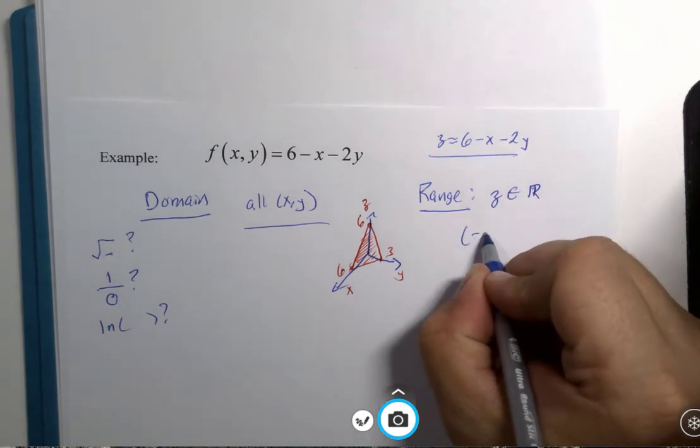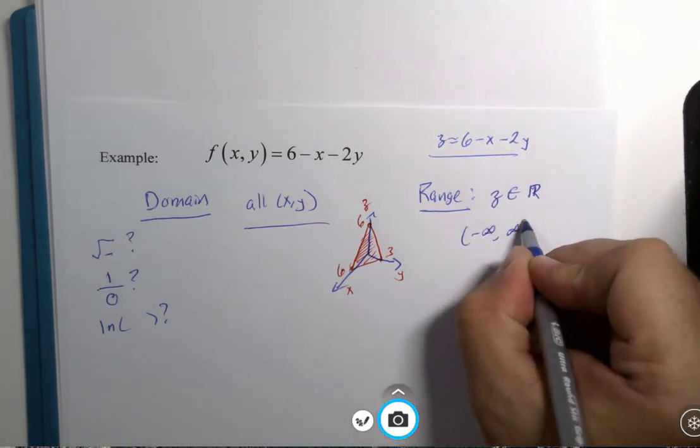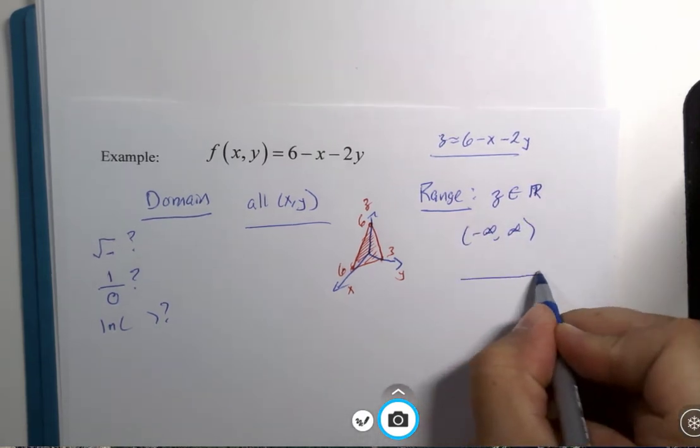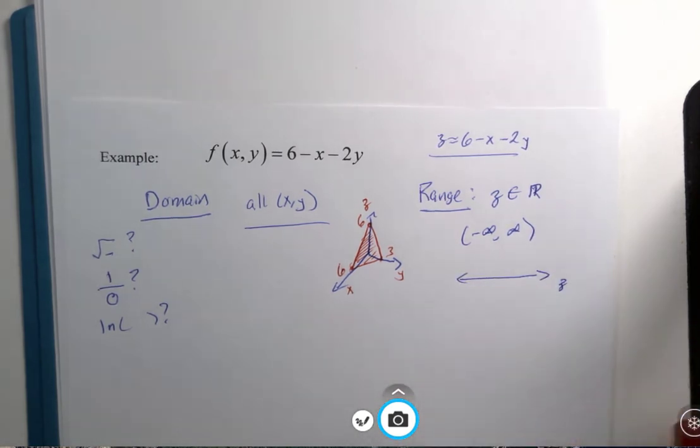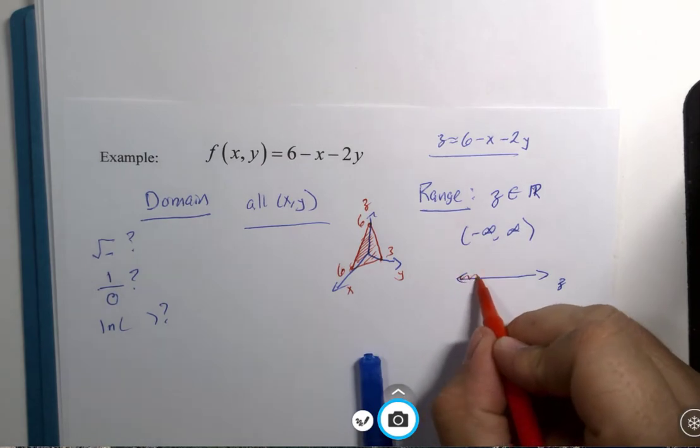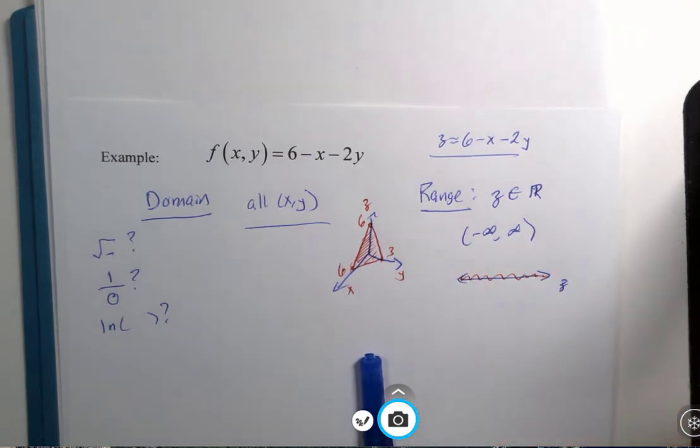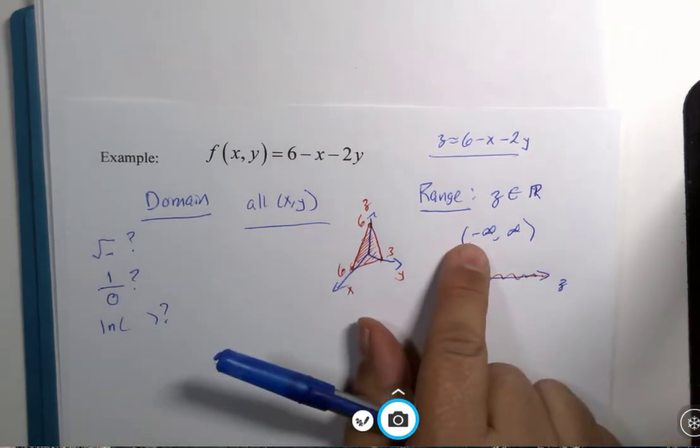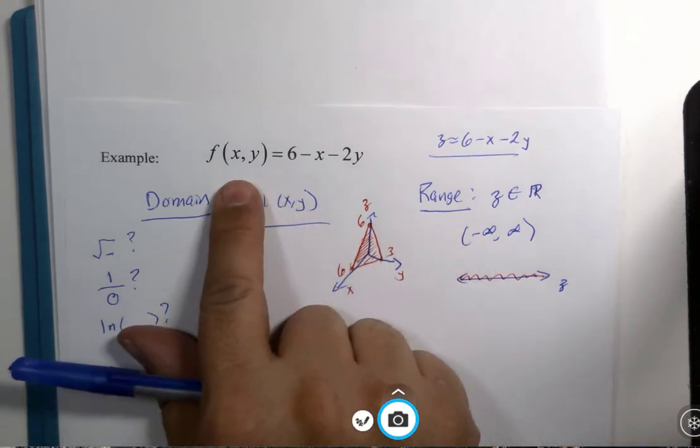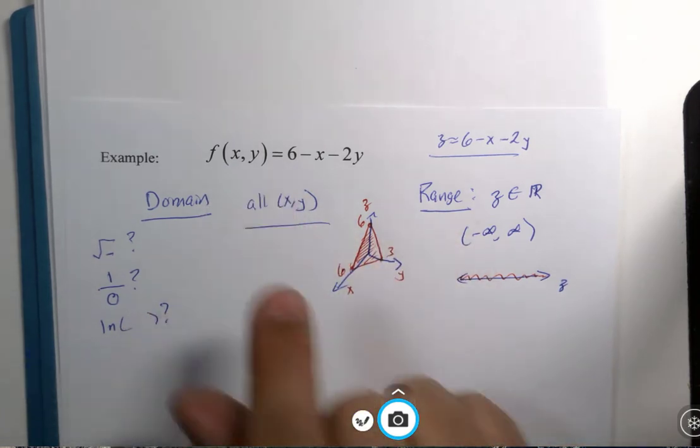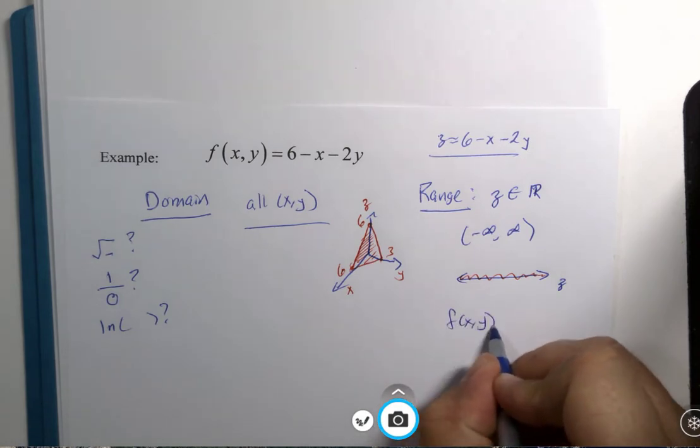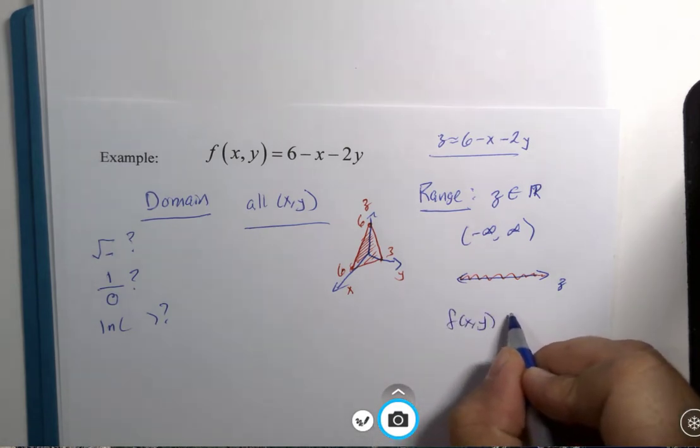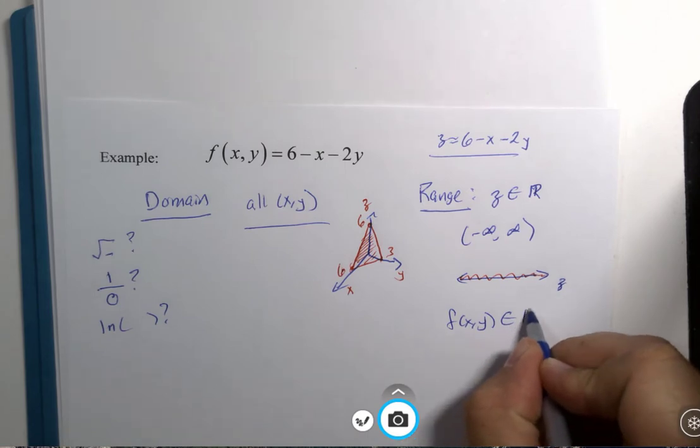You could use negative infinity to positive infinity. If you love your number lines, this is the z number line. If you argue, you know, the original problem never had the letter z in it, you could say f of x, y is an element of any real number.